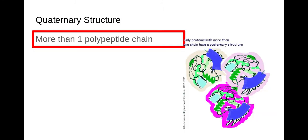The last one is a quaternary structure and this is where I've got more than one polypeptide chain such as haemoglobin that has four different polypeptide chains.